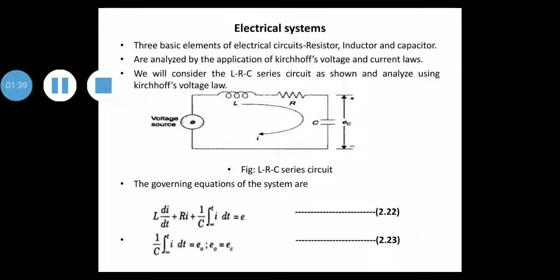The output voltage E0 is the voltage across capacitor EC. We can write: (1/C) integral from minus infinity to t of i dt = E0. So E0 equals EC. This is taken as equation 2.23.